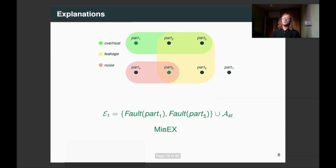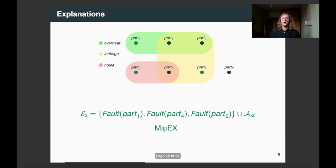So, for example, fault part one, fault part five, together with structural facts, is a min-ex, because we can't remove anything. And still, all of the failures are explained. Not all min-exes are of the same size. For example, fault part one, part four, part six, explains also all three failures, and none of them can be removed.